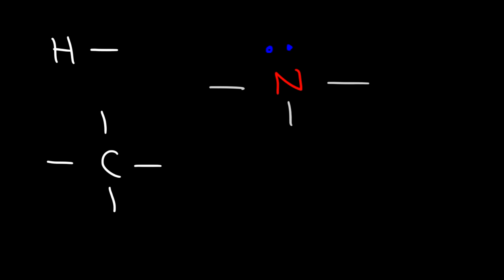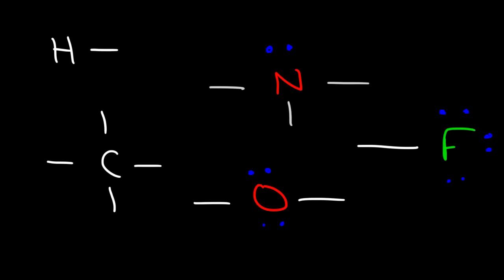Oxygen, which likes to form two bonds, has two lone pairs. The halogens like fluorine and chlorine like to form one bond and will have three lone pairs. Elements like carbon, nitrogen, oxygen, and fluorine like to have eight electrons around them. Hydrogen is in the first row, so it can only hold a maximum of two electrons, which is why it can only form one bond.